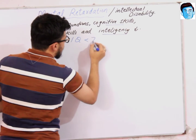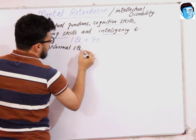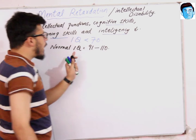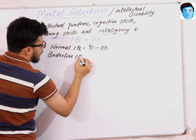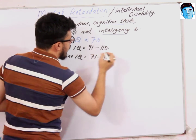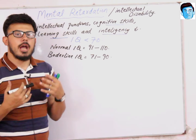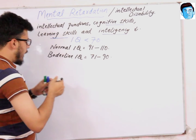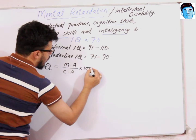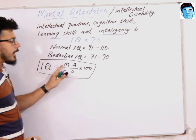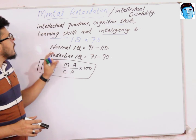The normal IQ in an individual is from 91 to 110, while the borderline IQ level is from 71 to 90. But in case of mental retardation, the patient has an IQ less than 70. The IQ level can be calculated by taking the ratio of mental age to chronological age, multiplied by 100. Mental age is determined by psychological testing, while chronological age is the actual age of the person.